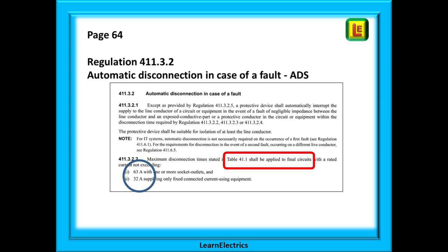The red box here tells us that table 41.1 on the next page only applies to final circuits. It also tells us that it only applies to circuits up to a certain size of amps as shown in the blue circle, 63 amps for circuits with sockets or 32 amps for fixed equipment.